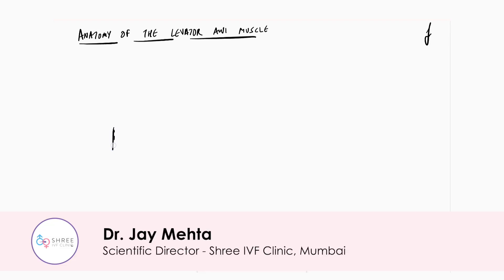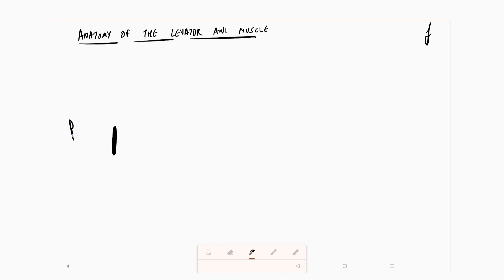Hi everyone, in this video we will be understanding the anatomy of the levator anii muscle. Let me just tell you that this is the lower part of the pubic symphysis. And here on the top we have the sacral promontory. If we look at the pelvis from the top,